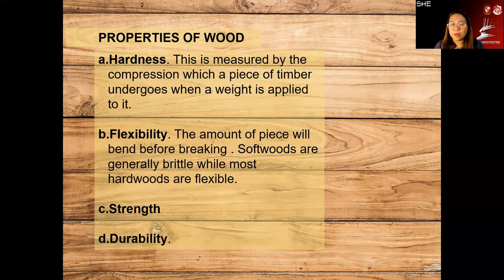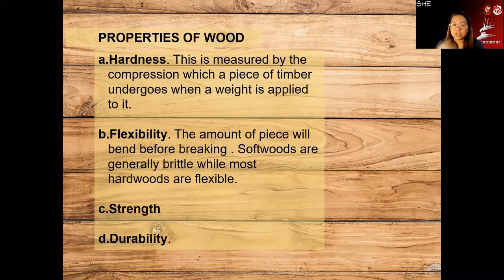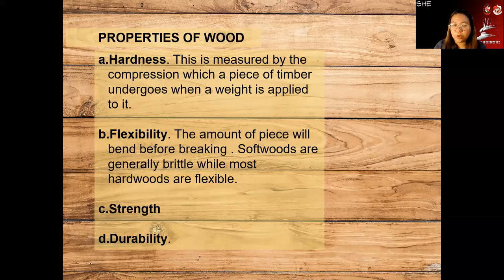We can see how strong and sturdy a piece of wood is when an applied load is placed on it — whether it will break or bend. Flexibility refers to the amount a piece will bend before breaking. As mentioned, wood follows the direction — it will just bend before it breaks. Softwoods are generally brittle while most hardwoods are flexible. That covers the strength and durability of wood.